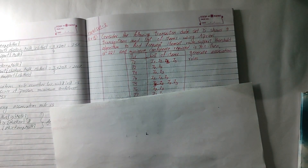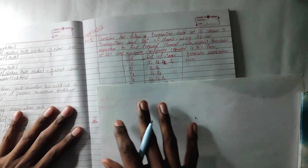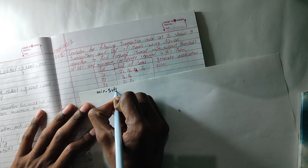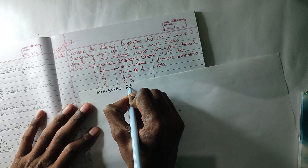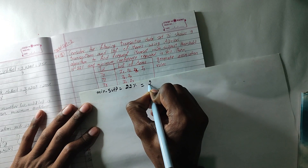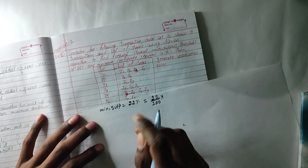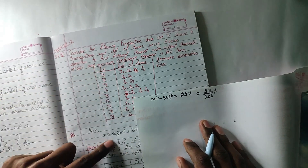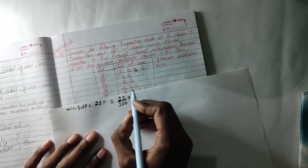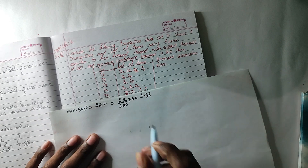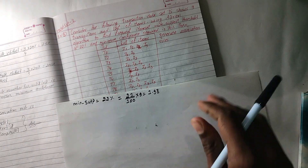Now the first thing you can see is the minimum support calculation. The minimum support — this is the question. It is 20 percent. The percentage is divided by 100 into TID. TID is 9. This is the calculation: 1.98. So the minimum support is 1.98.